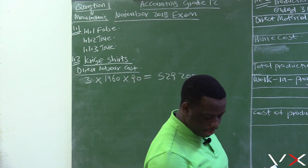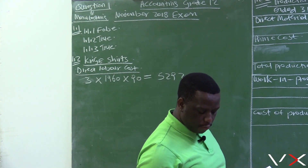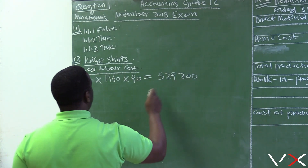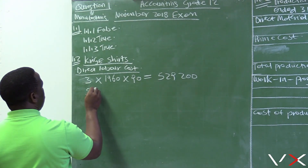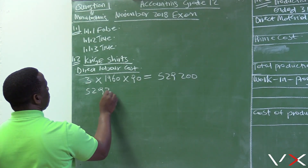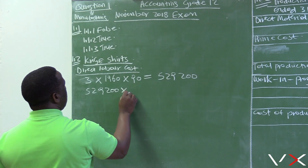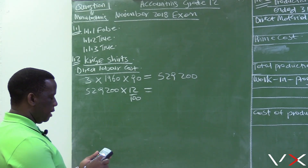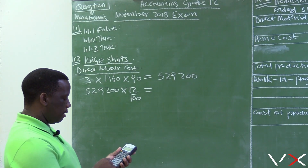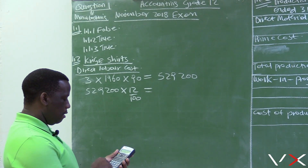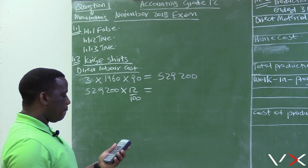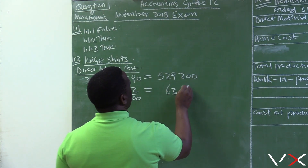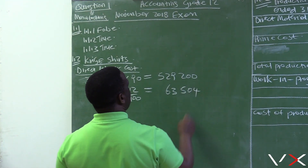These three workers will also receive a bonus of 12% of their normal wages. The normal wage for the three workers is 529,200, so the bonus is 12% of 529,200, which equals 63,504. This is the bonus for the three workers.